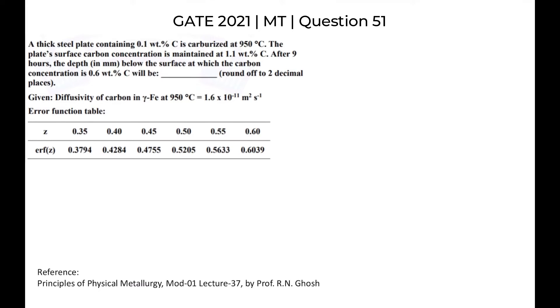Hello all, this is another question from GATE Metallurgy 2021. The question says a thick steel plate containing 0.1 weight percentage carbon is carburized at 950 degrees Celsius. The plate's surface carbon concentration is maintained at 1.1 weight percentage carbon.